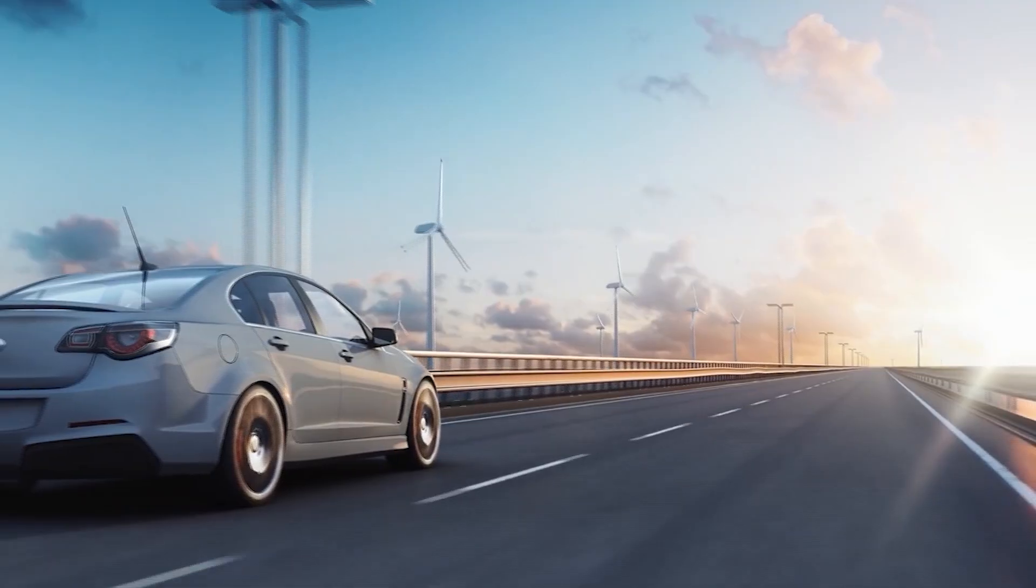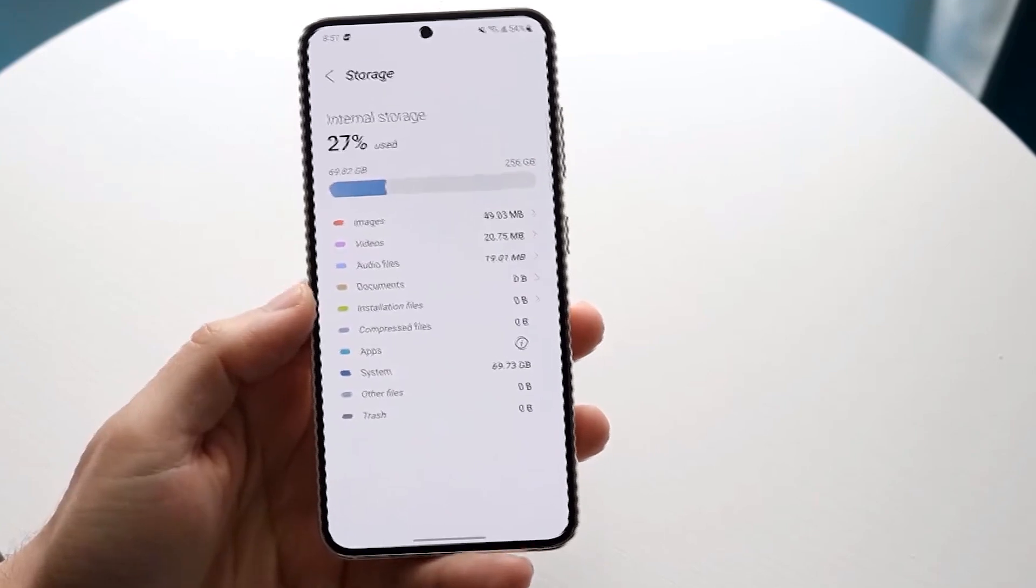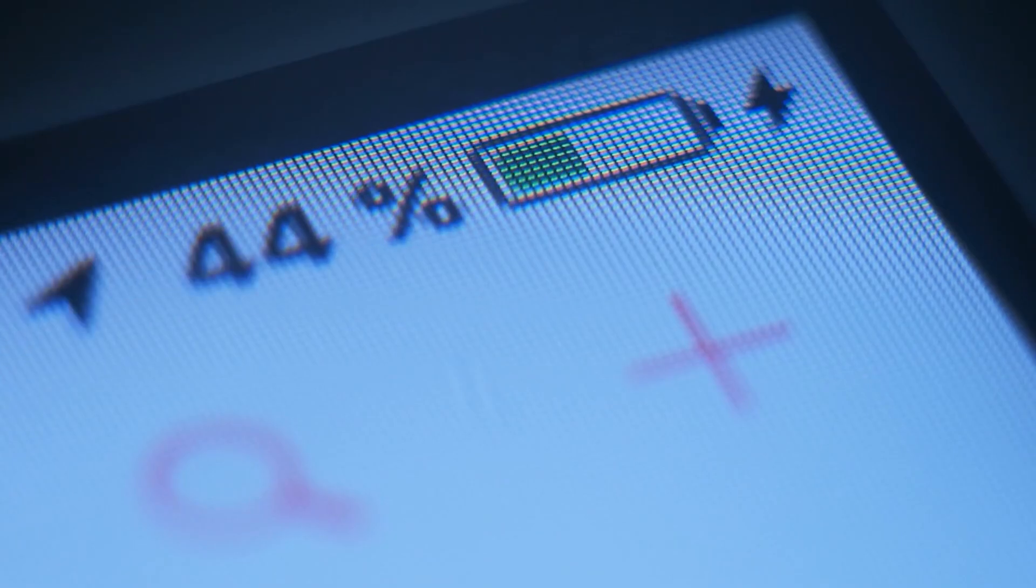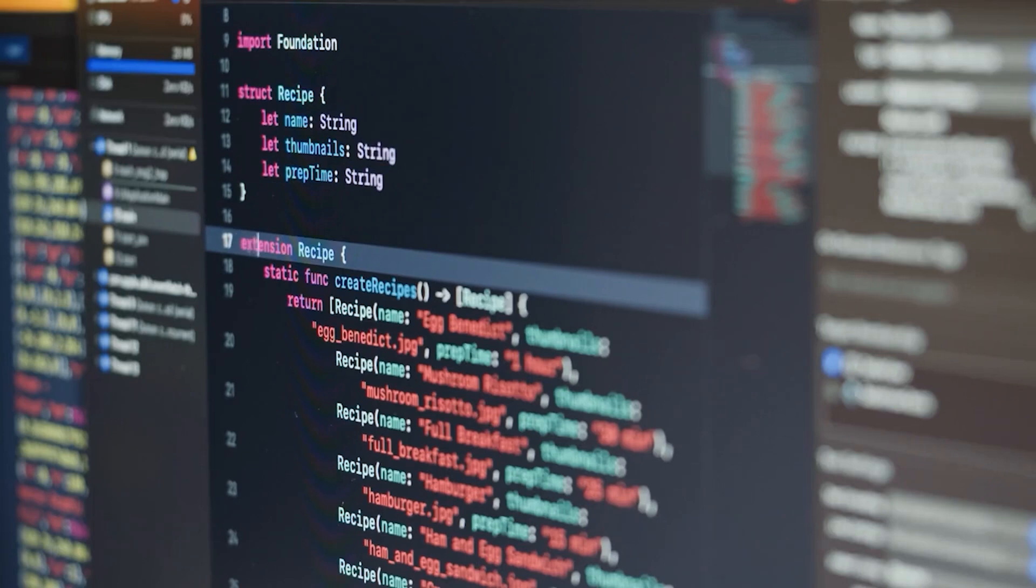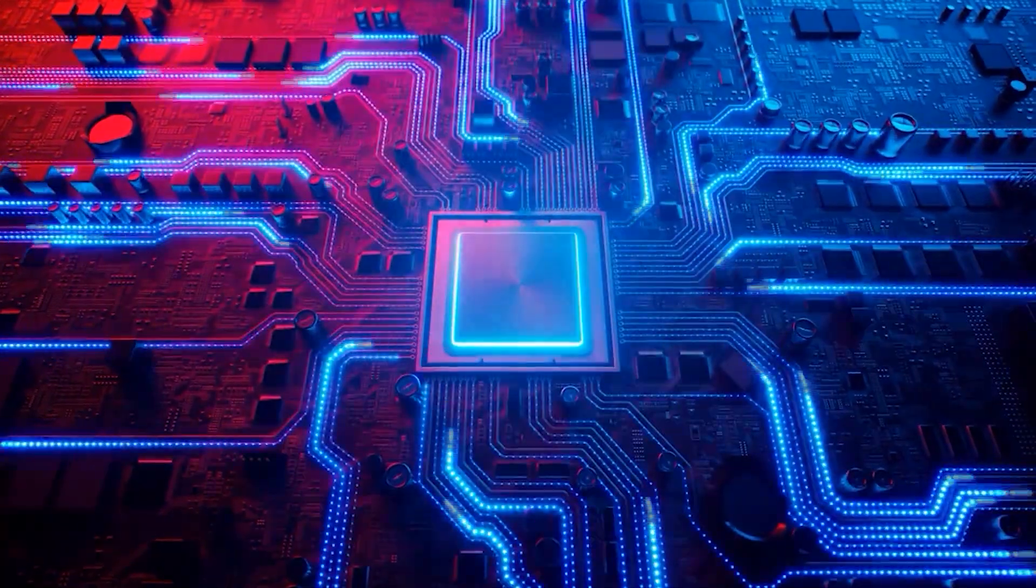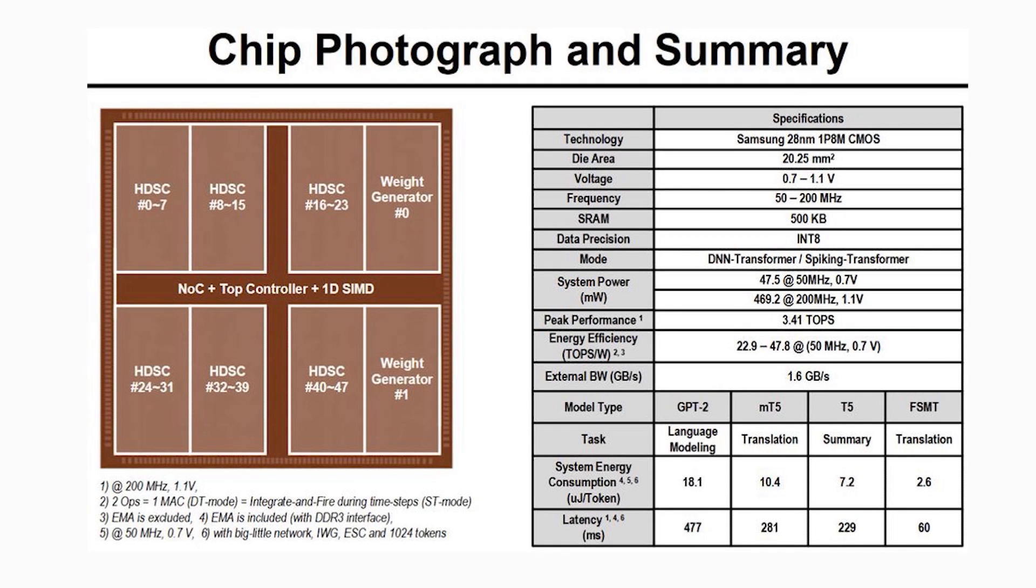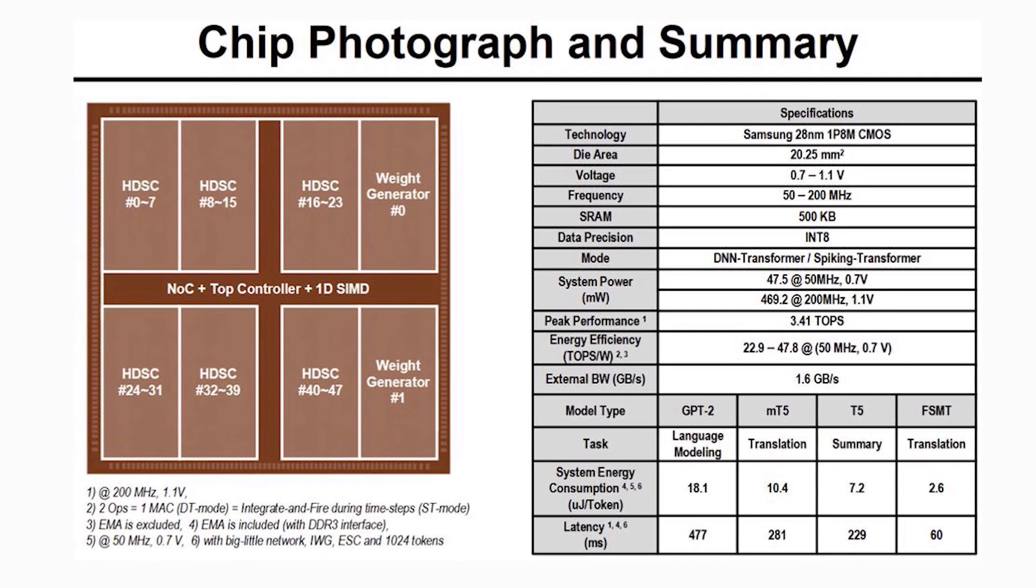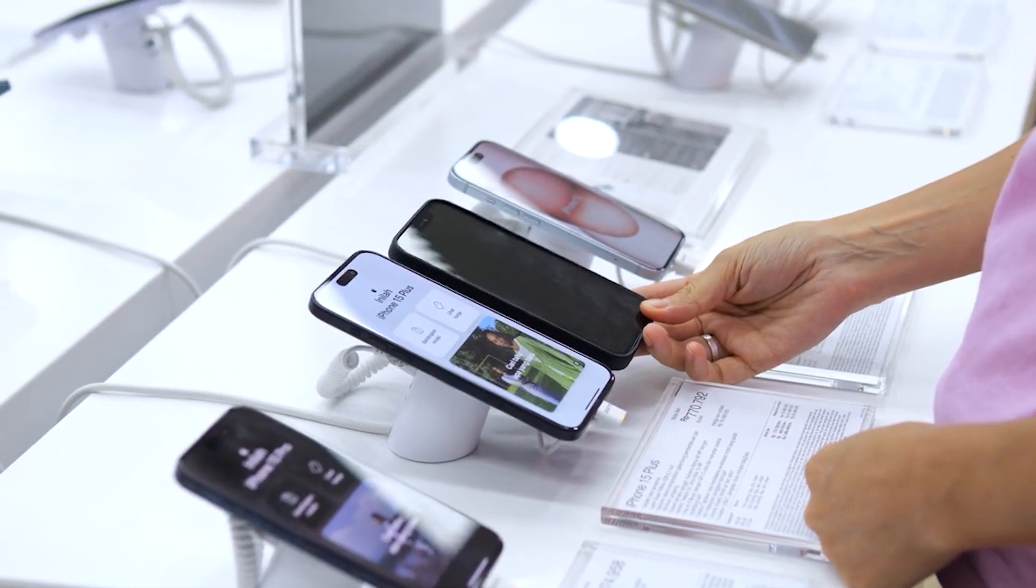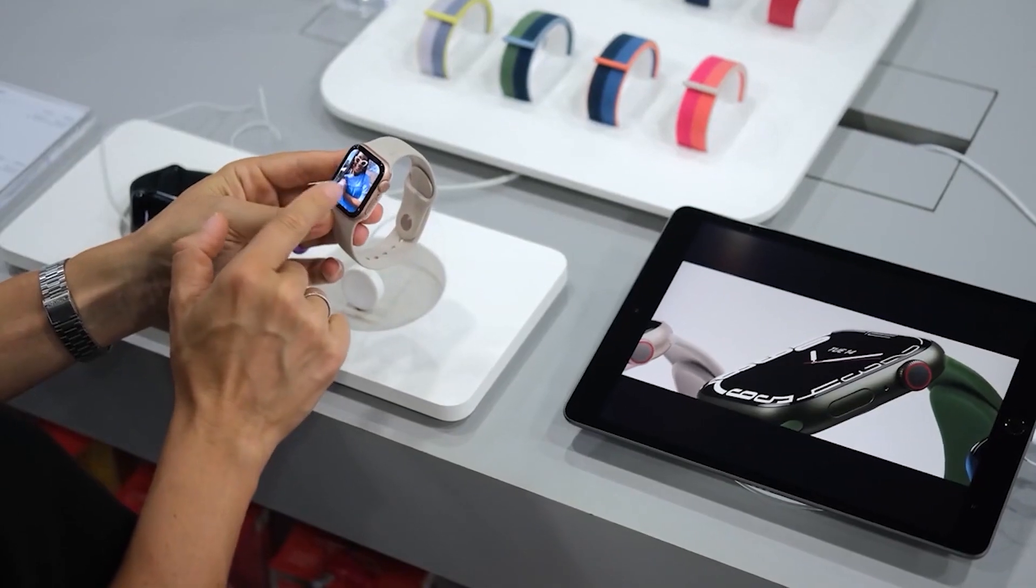In simpler terms, HDSC could be compared to streamlining a car's engine for better fuel efficiency, OSSU to optimizing storage in a smartphone to extend battery life, and IWGU to a smart algorithm that dynamically adjusts resources based on need, ensuring the system runs smoothly without wasting energy. This approach to chip design is not just a technical breakthrough, it has far-reaching implications. With the C-Transformer setting a new benchmark for power efficiency, we're looking at a future where advanced AI functionalities can be embedded into everyday devices without draining their batteries.